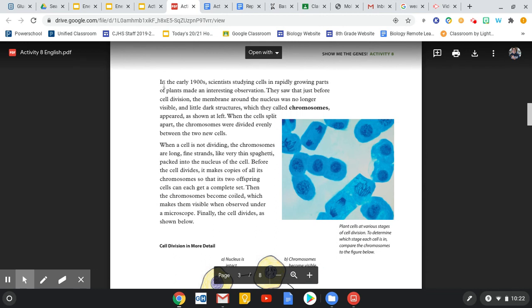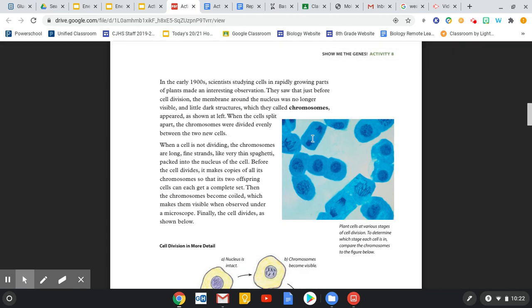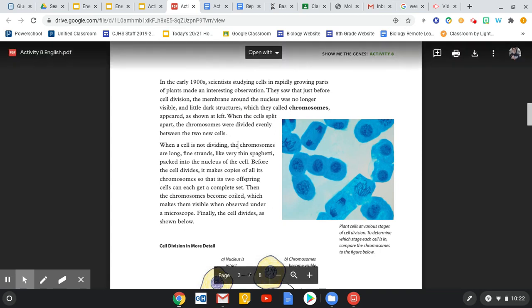In the early 1900s, scientists studying cells in rapidly growing parts of plants made an interesting observation. They saw that just before cell division, the membrane around the nucleus was no longer visible, and little dark structures, which they called chromosomes, you can see them right here, appeared as shown at the left. When the cells split apart, the chromosomes were divided evenly between the new cells.